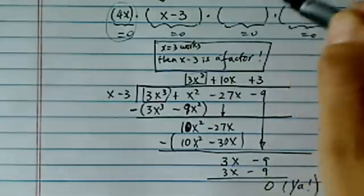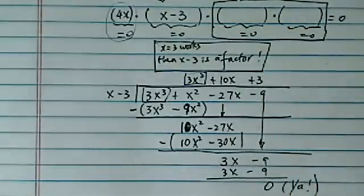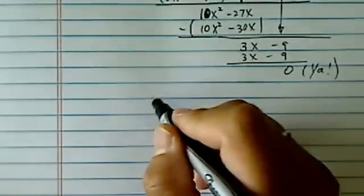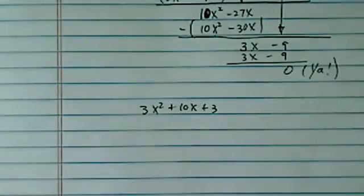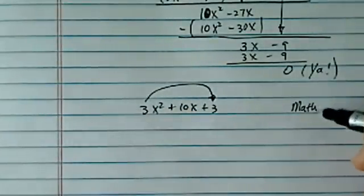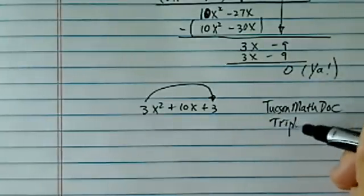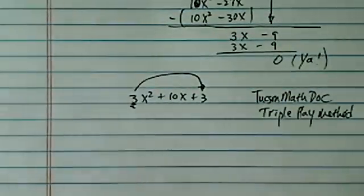Next thing, in order to get this factored form, we're going to have to factor it. So what I'm going to do here next is I'm going to grab this one I have as my result on top, 3x² + 10x + 3. I want to factor this one. I don't want to solve this one using quadratic equation if I can help it. Now in the channel, if you go onto my Tucson Math Doc channel, there is a method called the triple play. If you're not familiar with it, look it up.